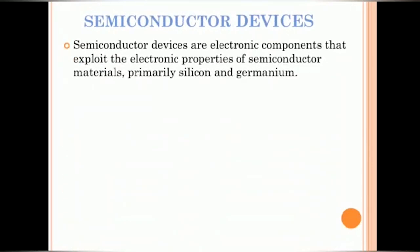So, the next development was semiconductor devices. Semiconductor devices are electronic components that exploit the electronic properties of semiconductor materials such as silicon and germanium. Among silicon and germanium, silicon is the most commonly used material in device fabrication because of its high temperature and high voltage withstanding ability and also silicon is abundantly available in nature.